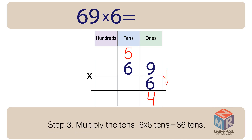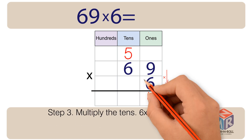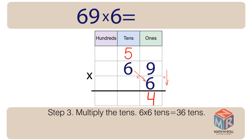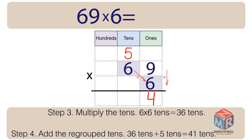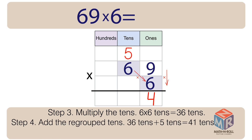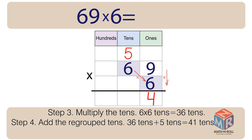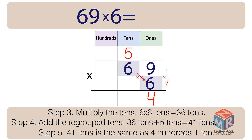Step 3: Multiply the tens. 6 times 6 tens is equal to 36 tens. Step 4: Add the regrouped tens. 36 tens plus 5 tens is equal to 41 tens.